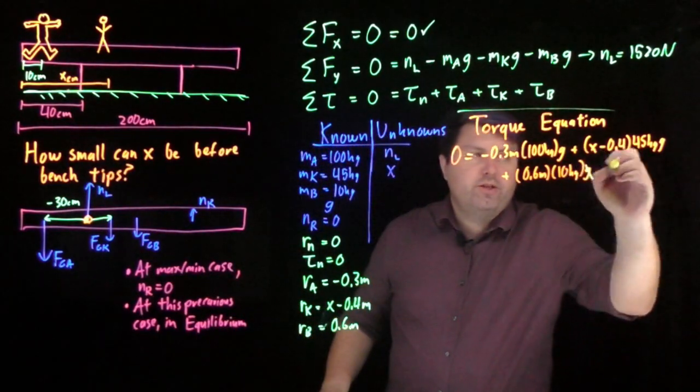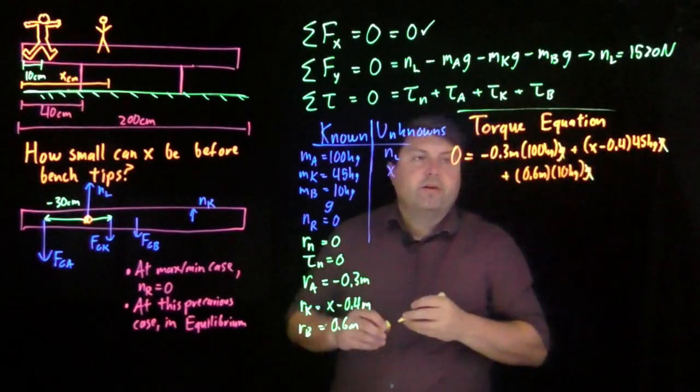And my bench is going to be 0.6 meters times 10 kilograms times g. And since this is all equal to zero, we can divide by g.